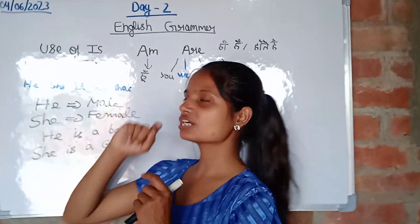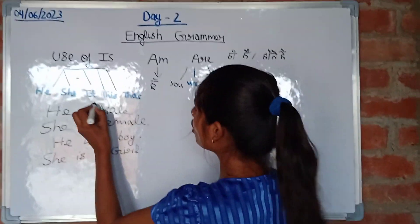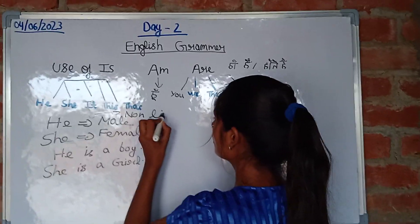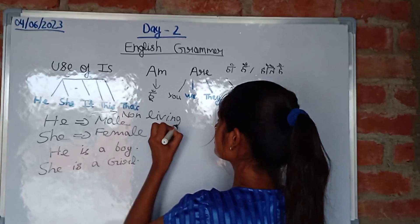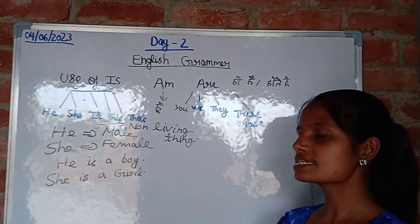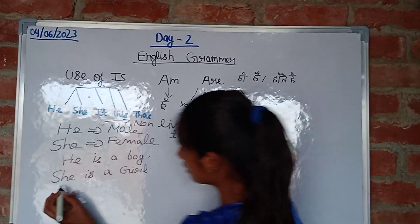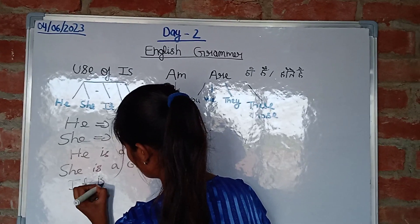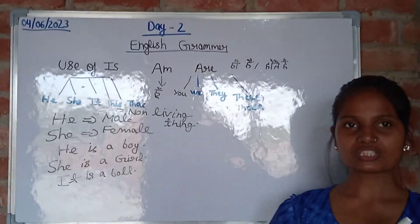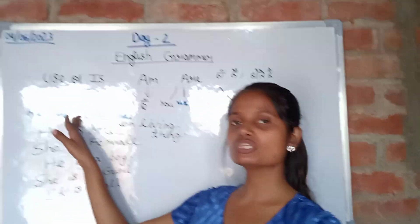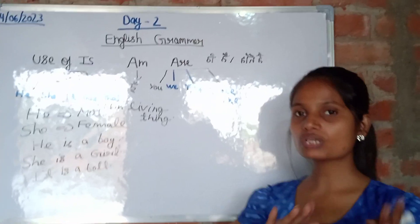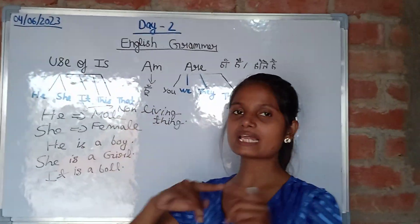Then we have 'it', and 'it' is used for non-living things. For example, 'it is a ball' — a ball is a non-living thing, so with non-living things we use 'it'. When we talk about 'this', we also use 'is'.